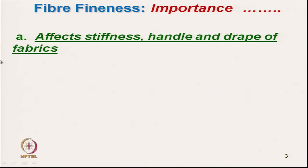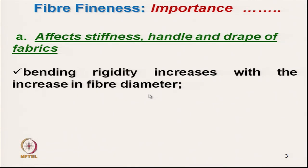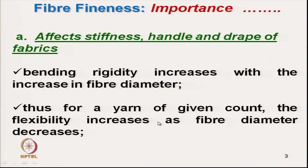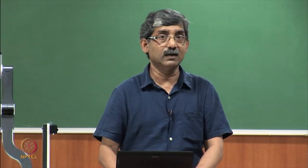Fibre fineness affects the stiffness, handle and drape of fabric. The bending rigidity of fibre increases with diameter, so as fibre diameter increases, bending rigidity increases, making the fabric stiffer and affecting drape. For a very soft, highly drapeable fabric we must use finer fibre. For a yarn of given count, flexibility increases as fibre diameter decreases — coarser fibre increases yarn stiffness.